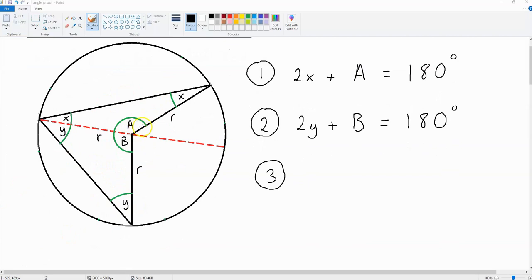To get our proof, we will have to find the value of a, and also the value of b. So, we're going to be using the information that we've written down over here to come up with these values. Let's first get the value of a. So, we've got 2x plus a is equal to 180 degrees. This means that a is going to be equal to 180 degrees minus 2x.